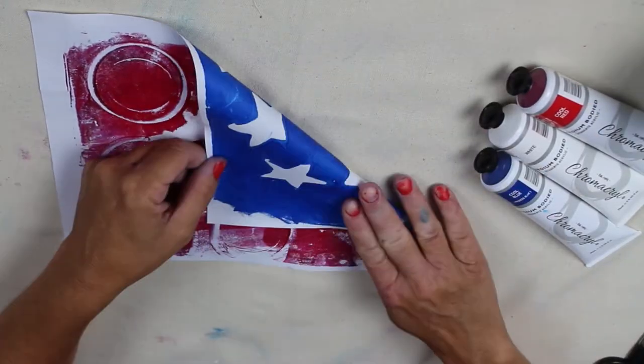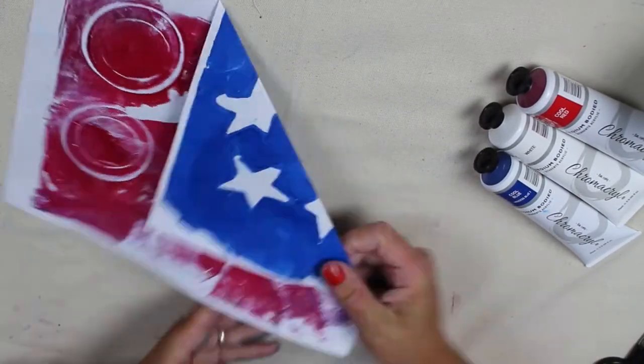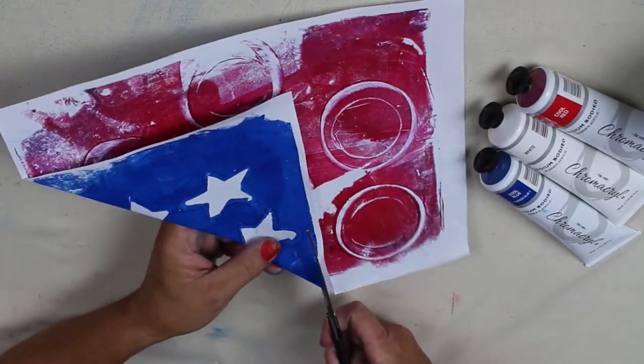Using the double-sided print, fold a corner so that you make a triangle. Cut the excess paper.